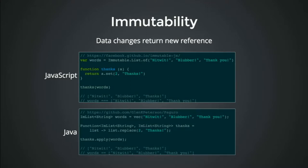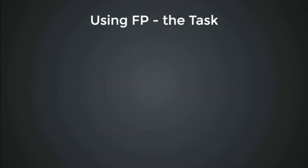Similarly in Java we use a thing called Perego — take my list, replace number two, give me a new reference to this changed list. And that's what it does. Any questions so far? All right, everyone's on board.